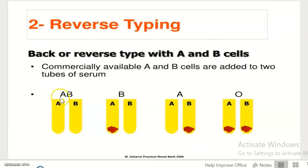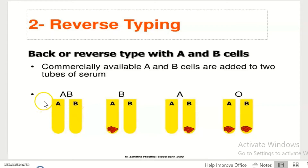If you see no reaction in either the A or B tube, it means the patient does not have A or B antibodies in their serum.